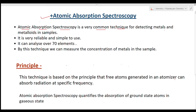Atomic absorption spectroscopy is a very common technique for detecting metals and metalloids in a sample. Traces of metals and metalloids can be detected with this technique. It is a very reliable and simple-to-use technique. It can analyze over 70 elements, and we can also measure the concentration of metals present in the sample.